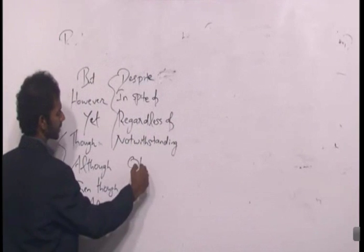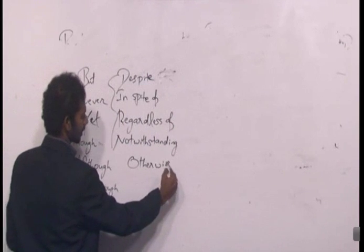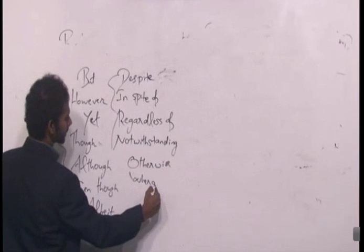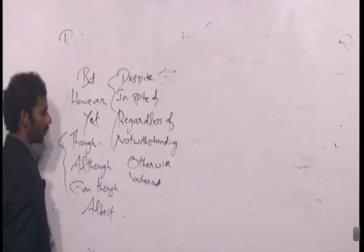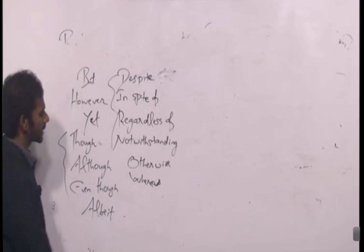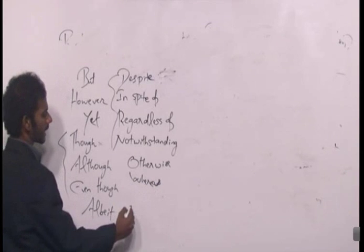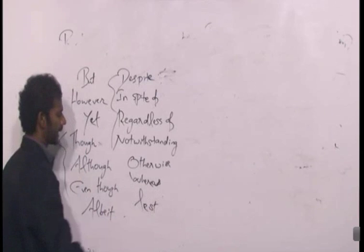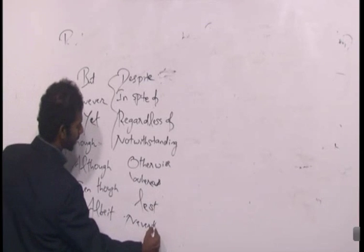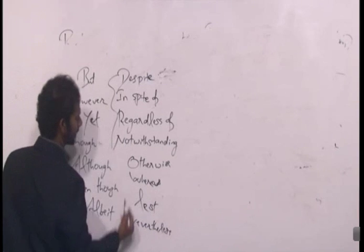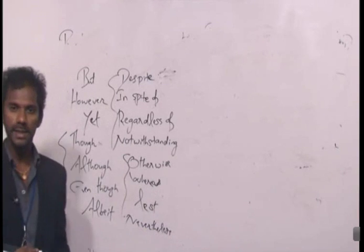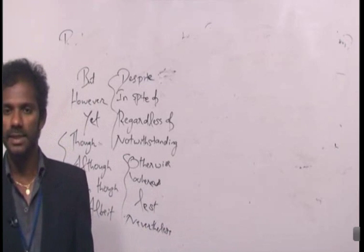More contrast indicators: otherwise, whereas, lest, nevertheless — these mean the same. In contrast, on the contrary, on the other hand, in opposition to — these four also mean the same. Rather than, instead of, not, unlike — also contrast indicators. Be more careful about contrast indicators while reading, as they signal a change in charge.